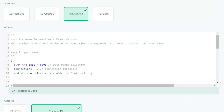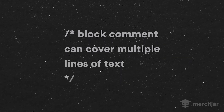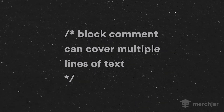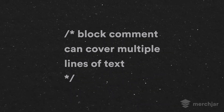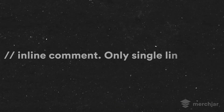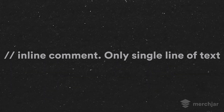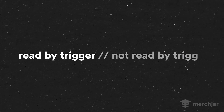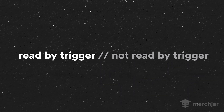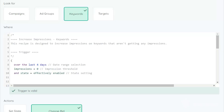Everything you see that is grayed out inside the trigger is a comment that provides additional information or context and is not taken into account by the recipe. There are two types of comments. A block comment can cover multiple lines — it's started with a forward slash followed by an asterisk and ended by an asterisk followed by a forward slash. The other type is an inline comment, started using two forward slashes, covering only a single line. Anything after the two forward slashes won't be read, while anything before them on the same line will still be read, making them useful for notating what a line does, like on line eight.